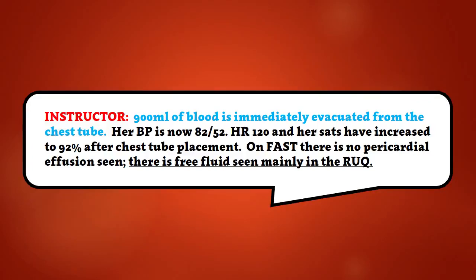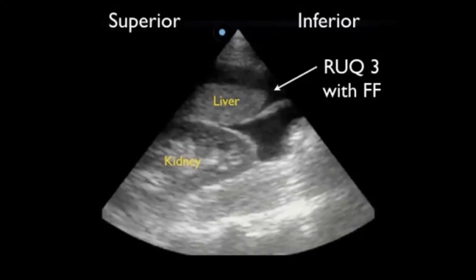On FAST, there is no pericardial effusion seen. There is free fluid seen mainly in the right upper quadrant.